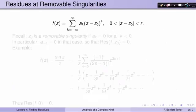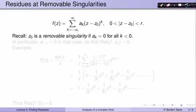Let's start with finding residues at removable singularities. Recall that a removable singularity is one for which, after finding the Laurent series, there are actually no terms with negative powers of (z minus c0). So all the a_k's are equal to 0 for k less than 0. In particular, a_{-1} must equal 0, which is the residue. So in that case, the residue of f at c0 is 0.